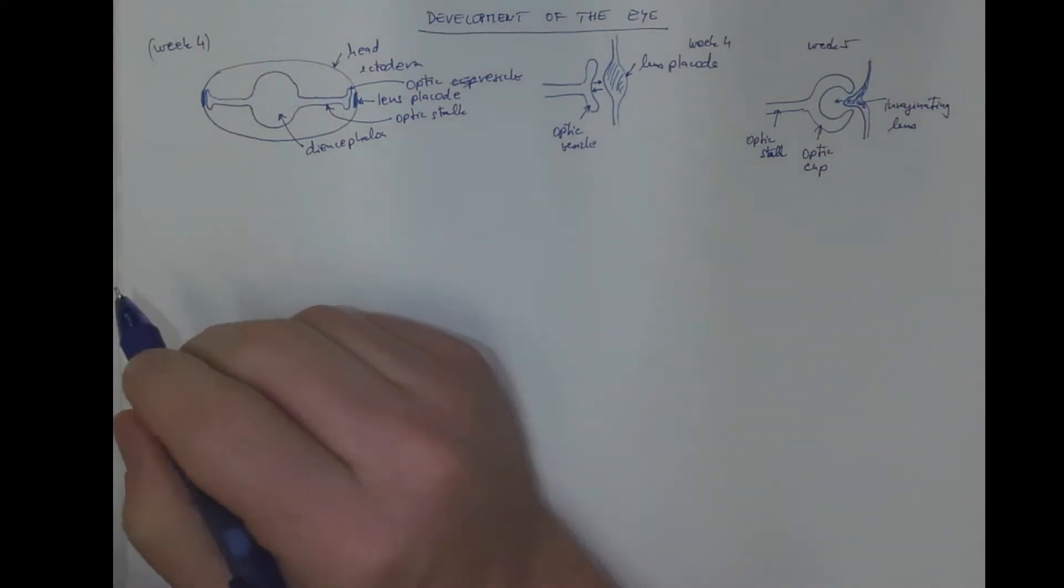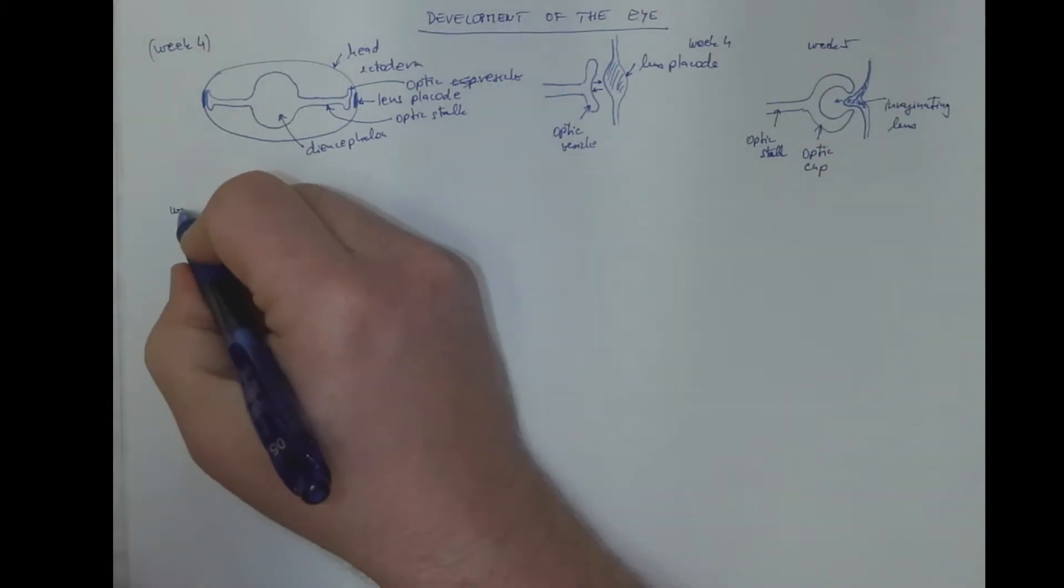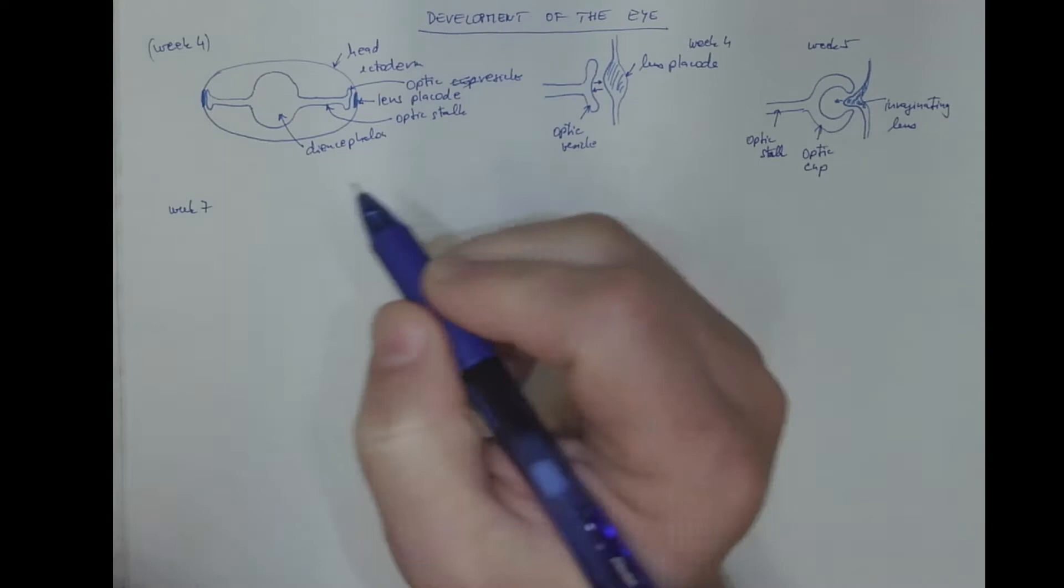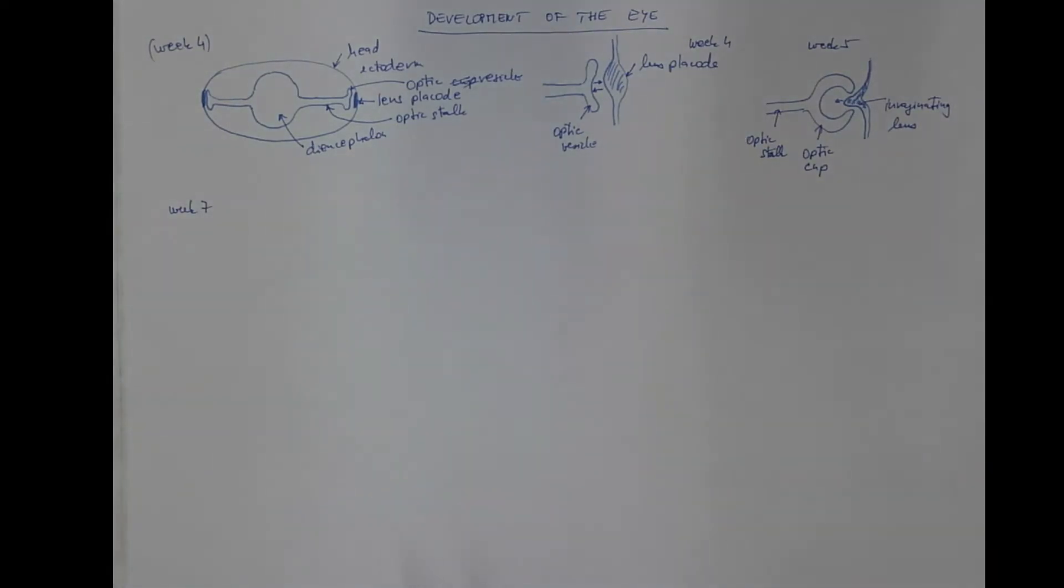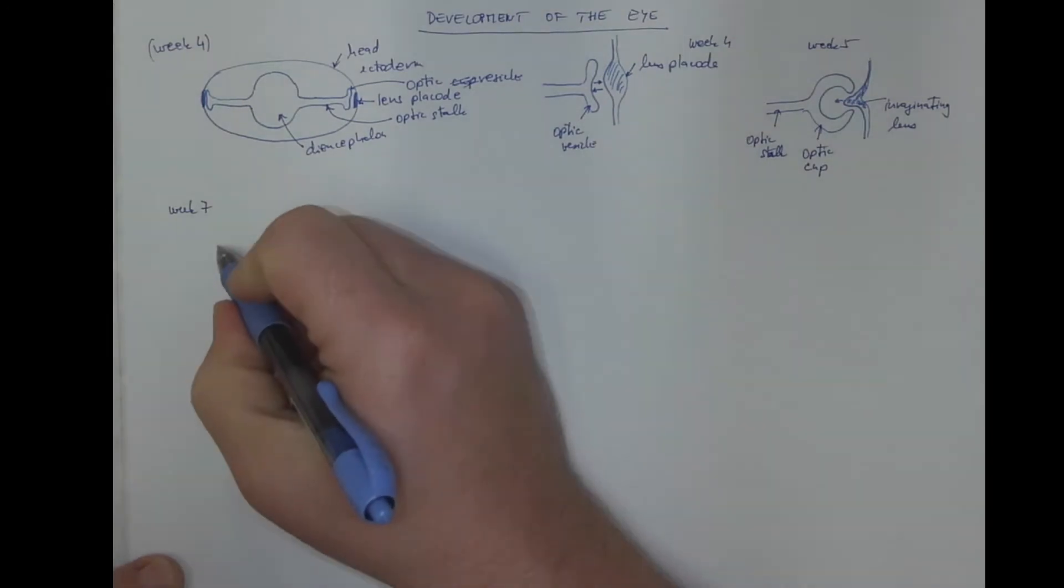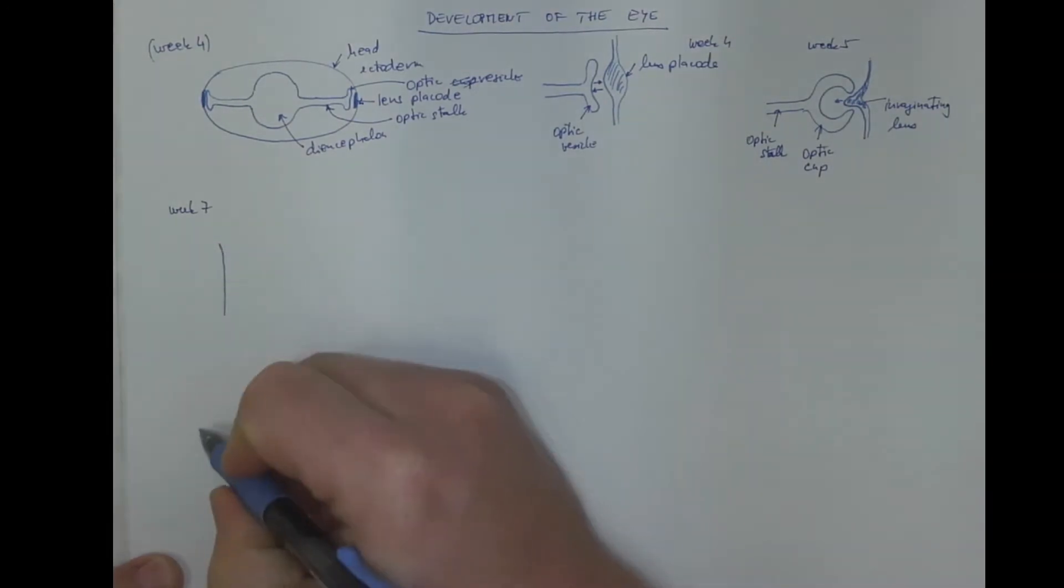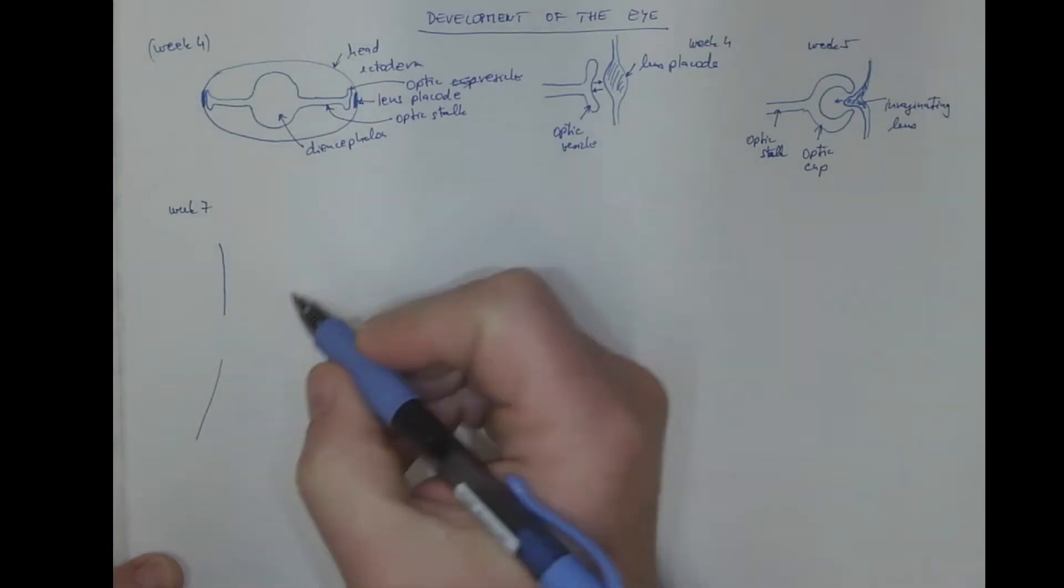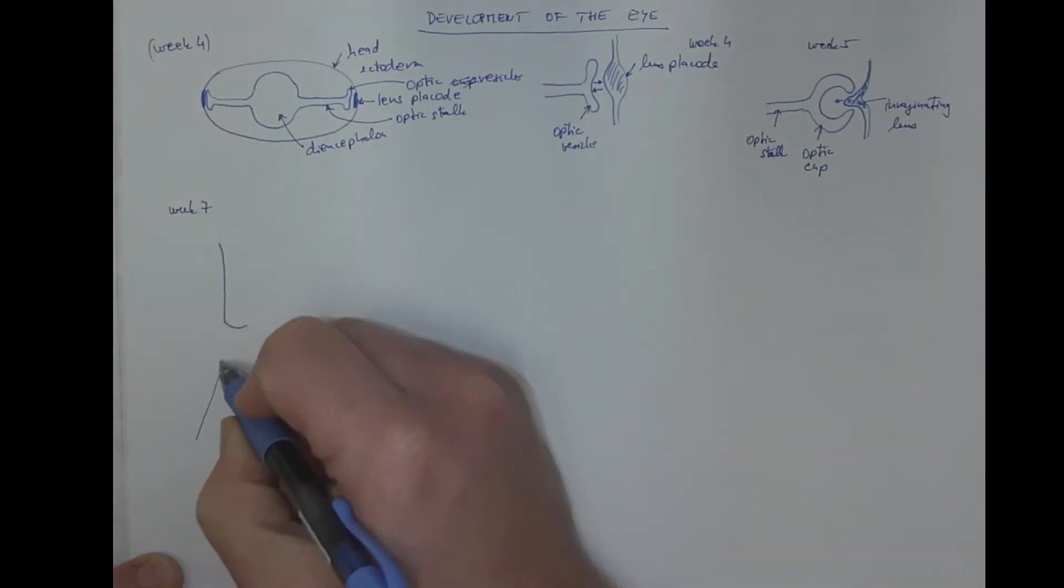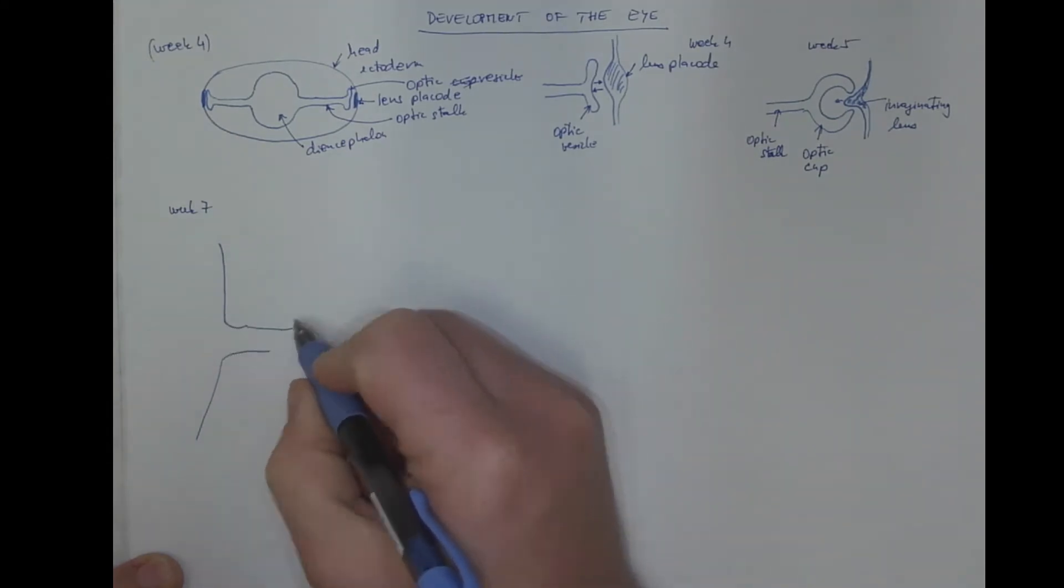In seventh week, all the basic layers of the eye are already formed. So if this is the wall of the diencephalon, this is the optic nerve. That's what the optic stalk becomes.